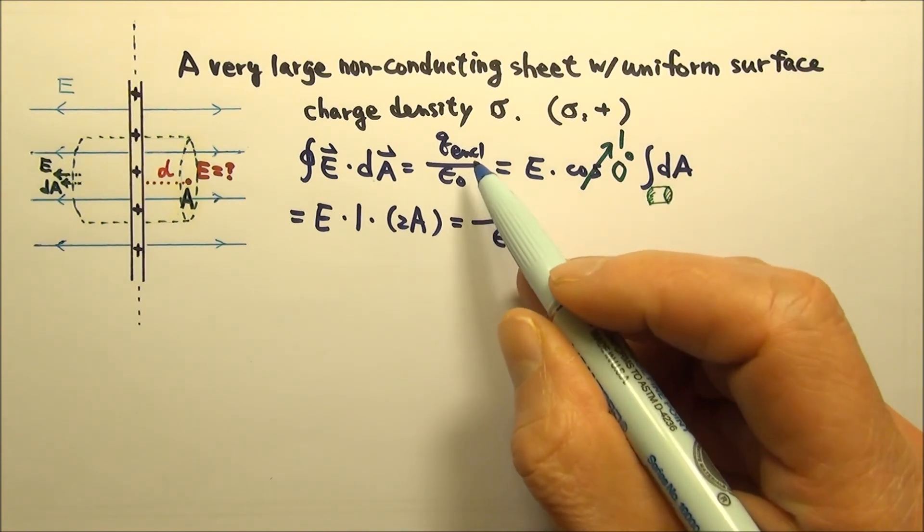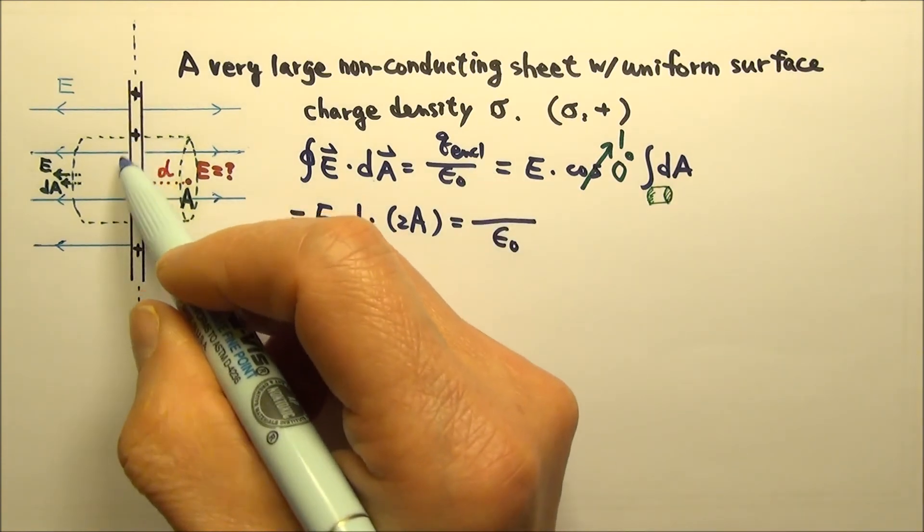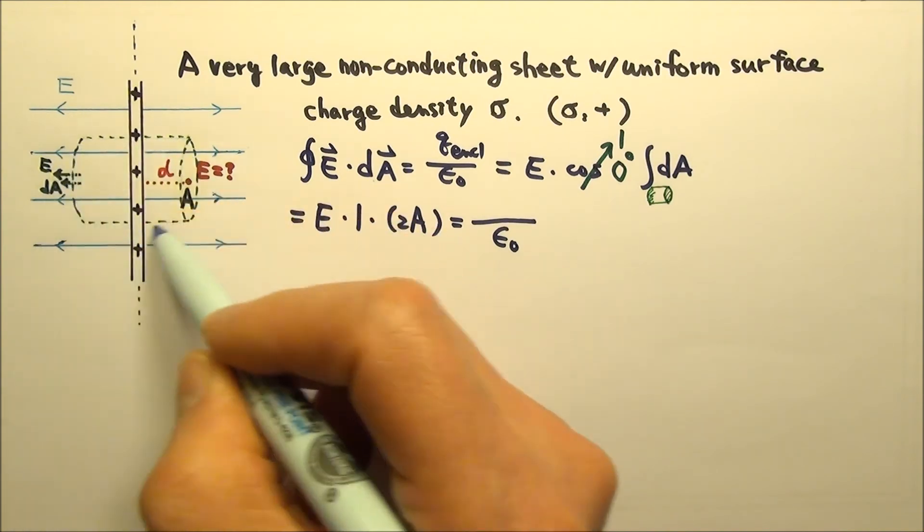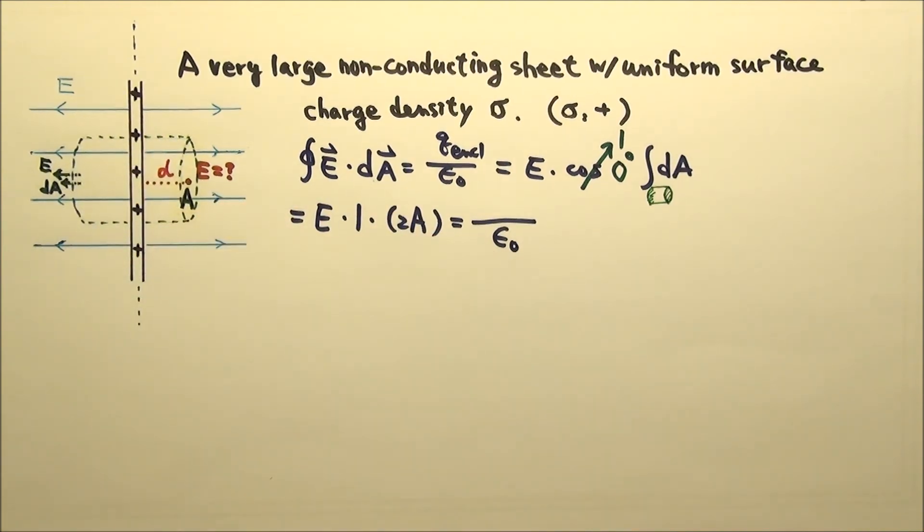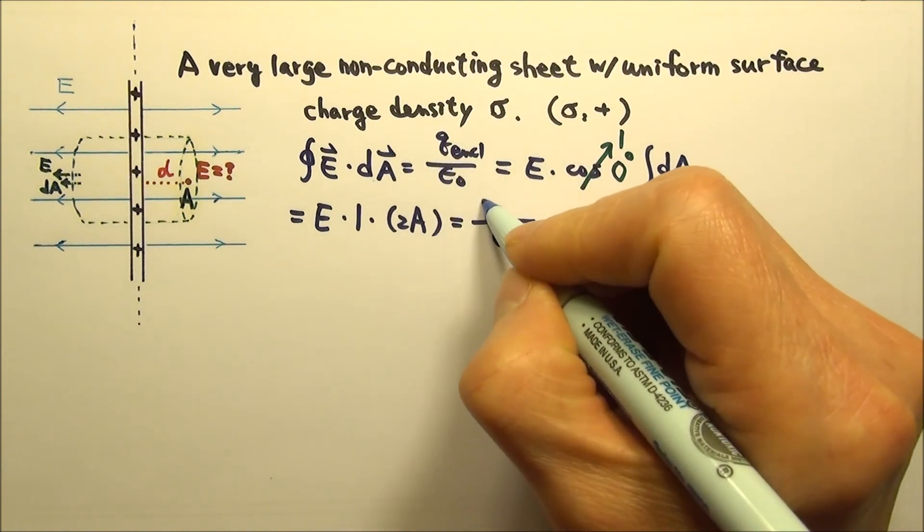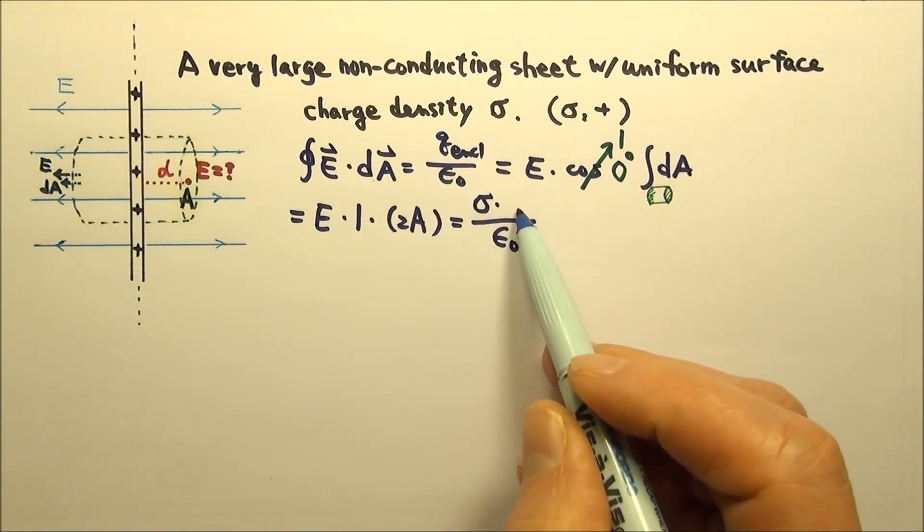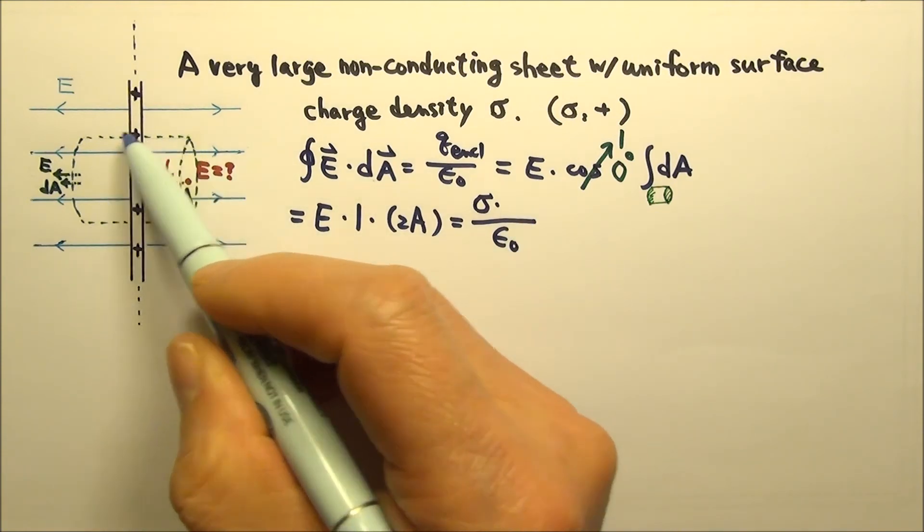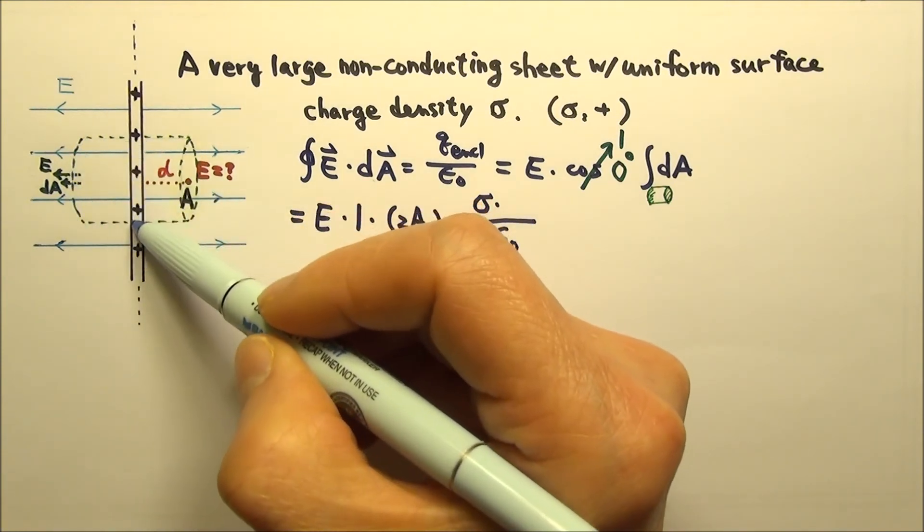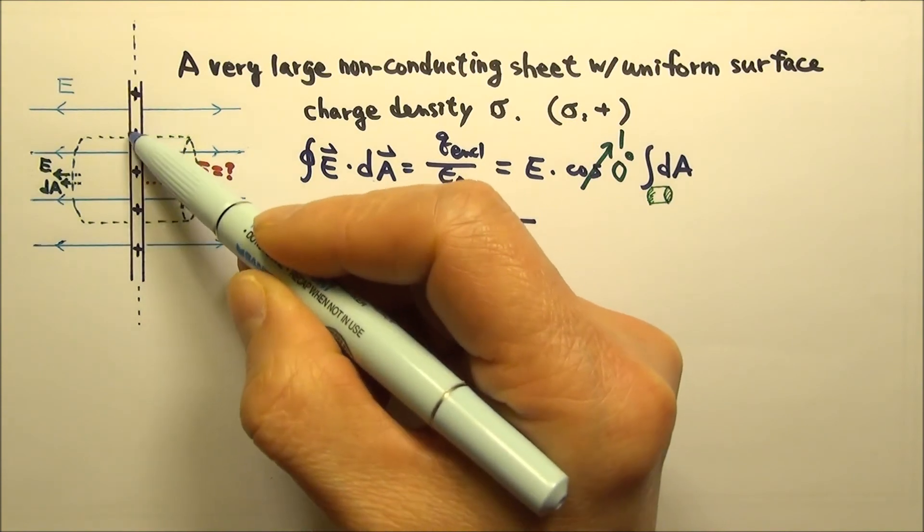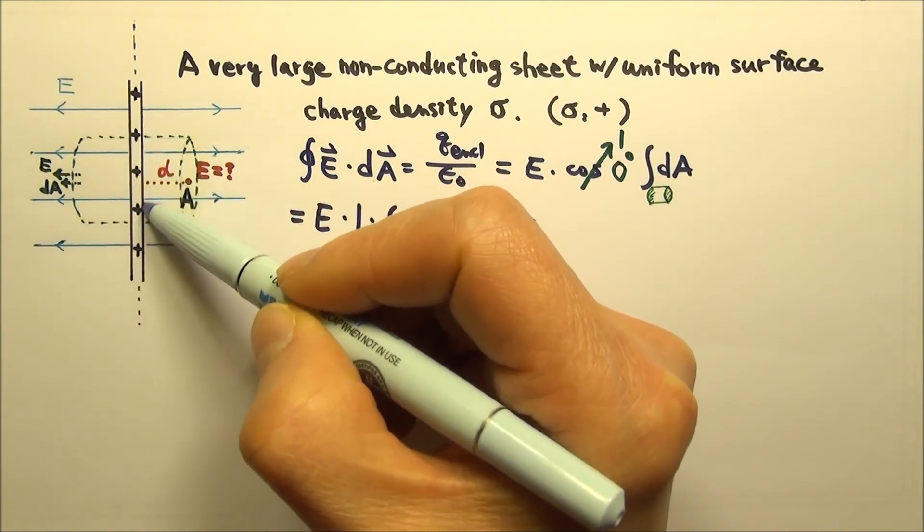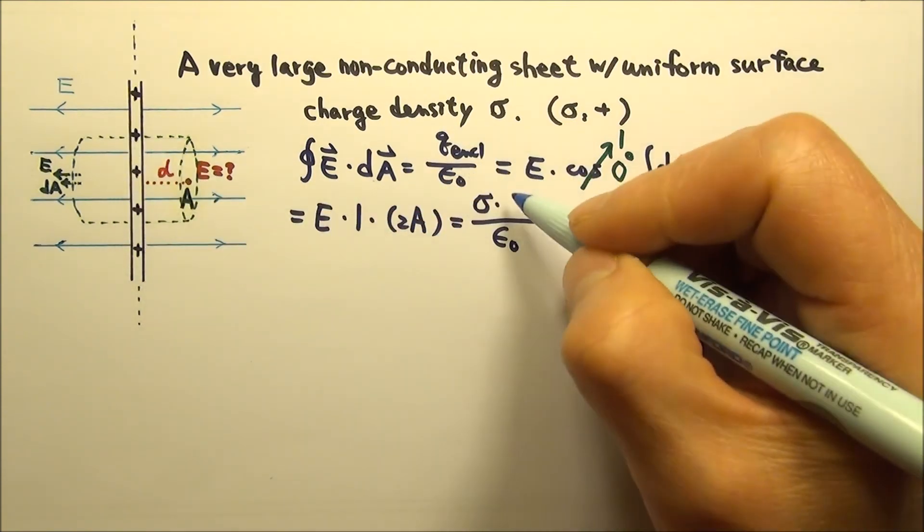What is the net enclosed charge we can find inside this Gaussian surface? We have surface charge density, so we need to multiply the surface charge density by the area. And inside the Gaussian surface, we only have this area that has the charge, which is the same as the cross-sectional area, A.